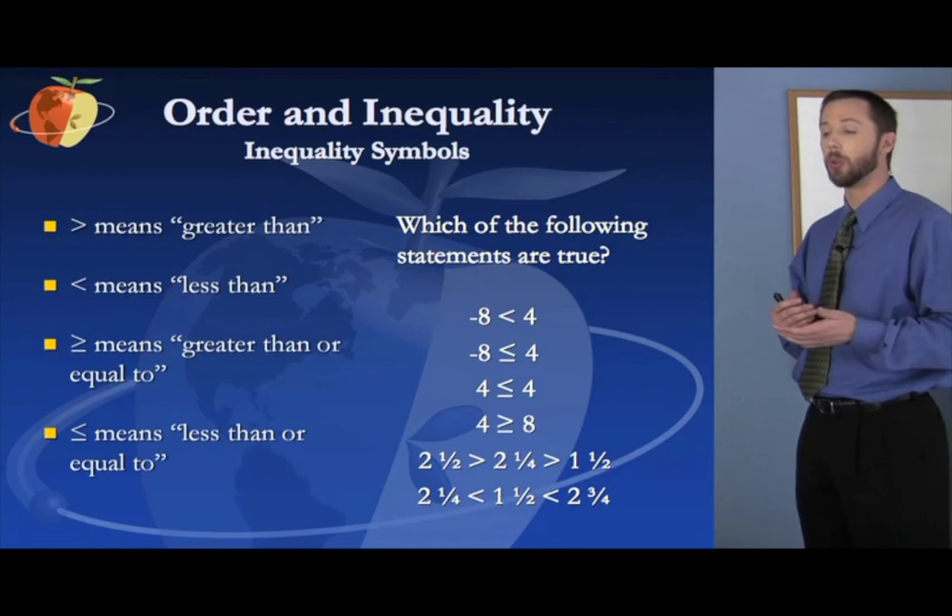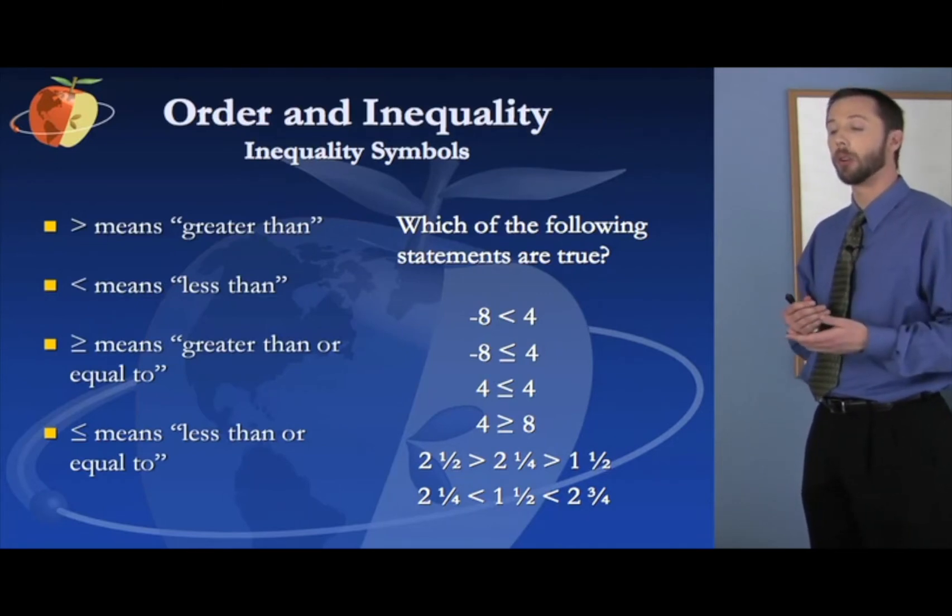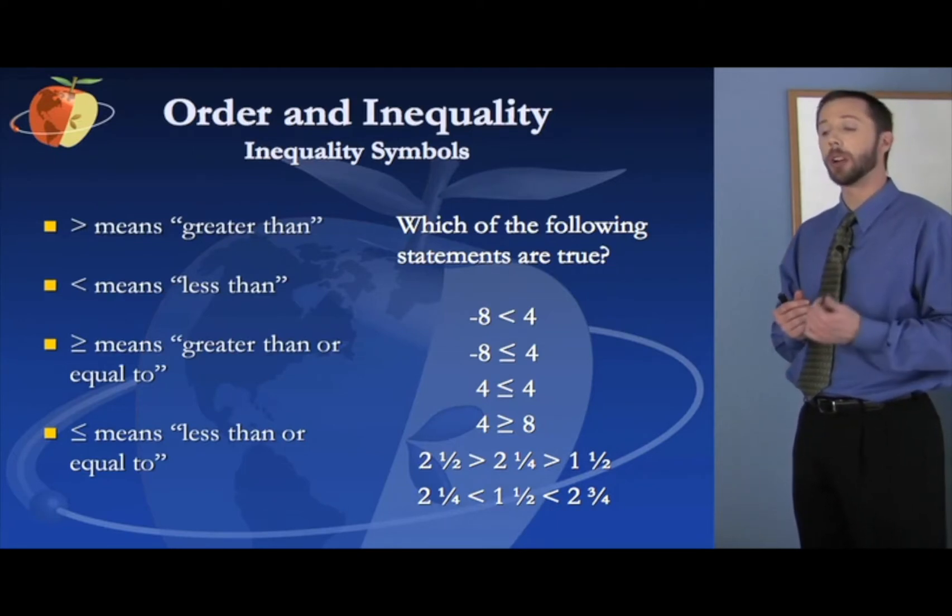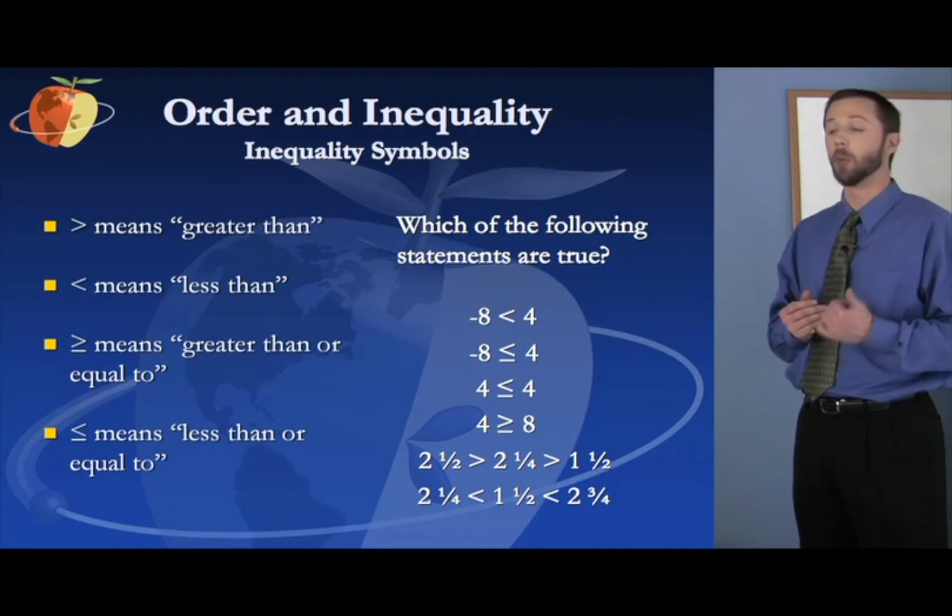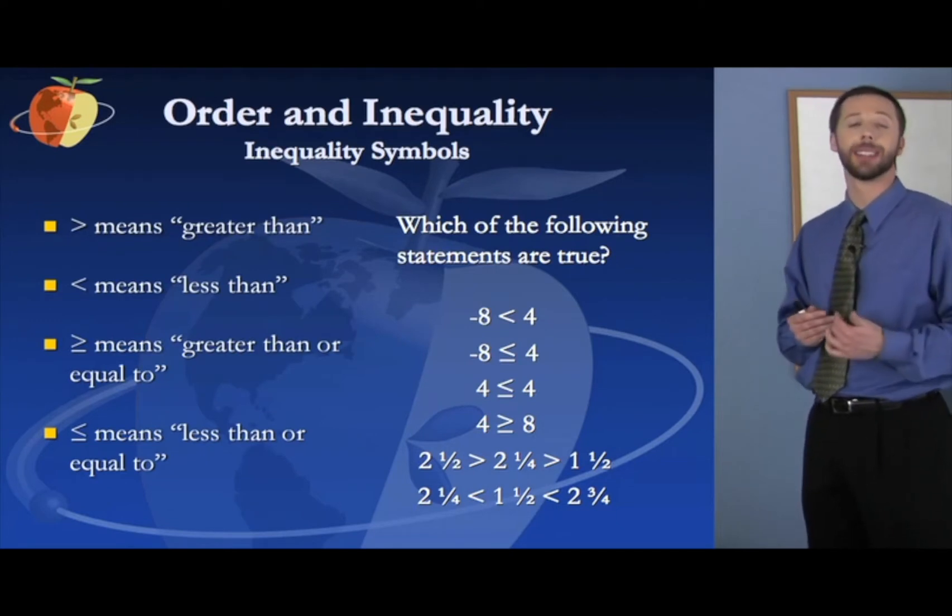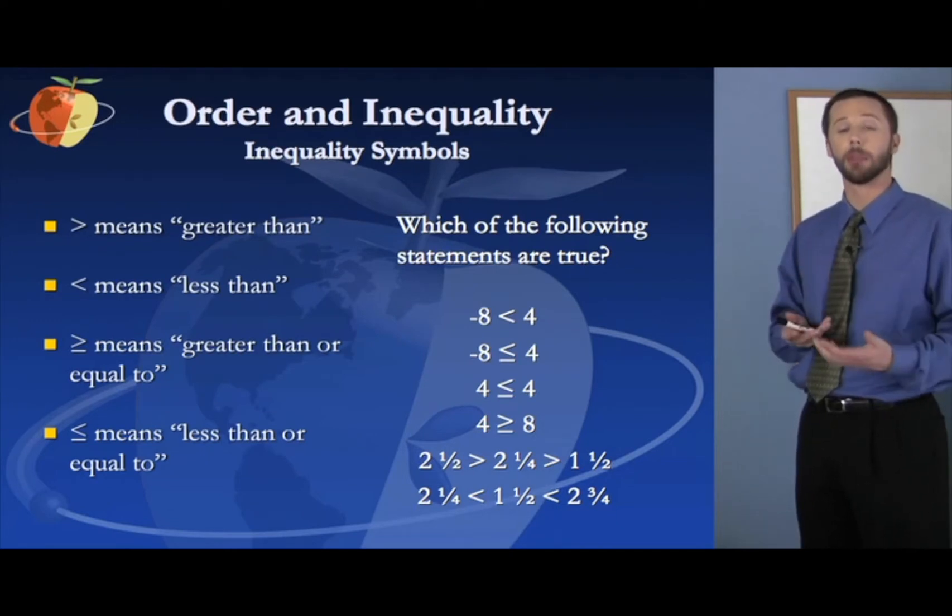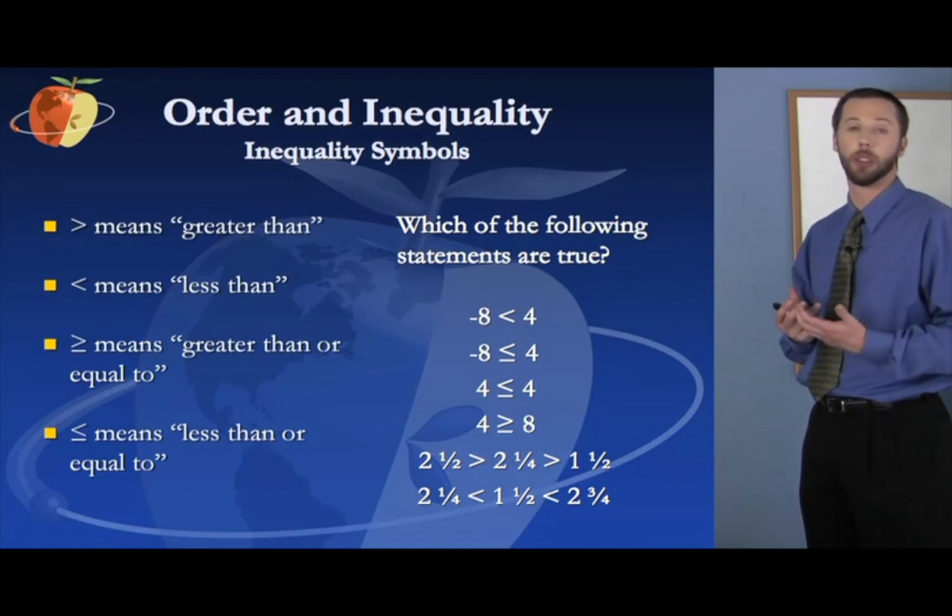The last one here says two and a quarter is less than one and a half is less than two and three fourths. Well, one and a half is less than two and three quarters. But two and a quarter is not less than one and a half. So if any part of that statement is untrue, the whole statement is considered untrue. So that last statement is not correct.